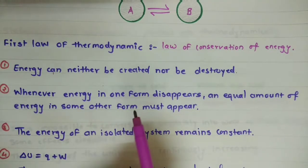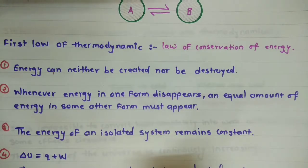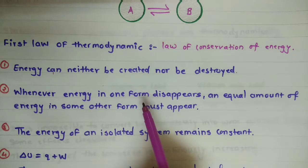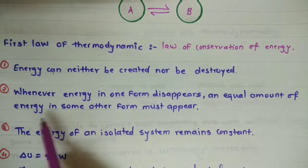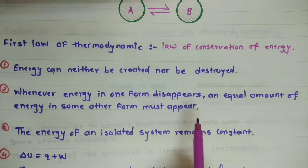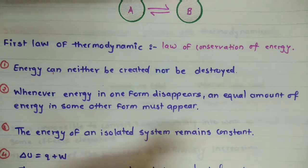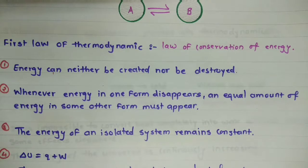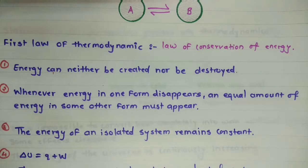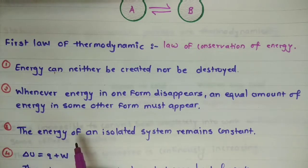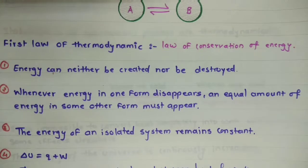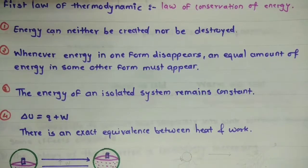The meaning of this statement is that energy cannot be created or destroyed — it is always present in some form. The second point of this law is: whenever energy in one form disappears, an equal amount of energy in some other form must appear. The third point is that the energy of an isolated system remains constant.